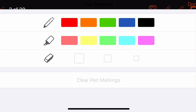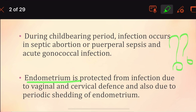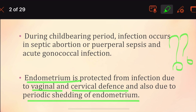Why does this inflammation occur? Normally, the endometrium is protected from infection by vaginal and cervical defense. The vagina has lactic acid secretion which maintains vaginal pH between 4 to 4.5. Because of this acidic pH, pathogenic bacteria like gonococci, Trichomonas vaginalis, and Candida species are destroyed. The cervical defense is produced by cervical mucus which contains lysozyme that destroys any bacteria trying to cause infection. There is also periodic shedding of the endometrium, which prevents bacteria from overgrowing.